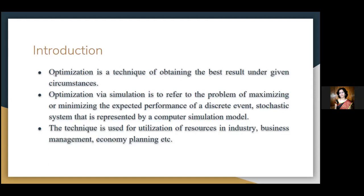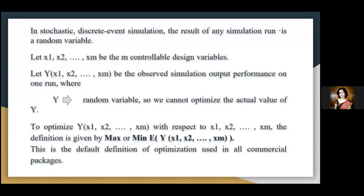The goal in optimization via simulation is to minimize or maximize some measure of system performance, and system performance can be evaluated only by running a computer simulation. Optimization via simulation is relatively new, but already a vast topic with commercial software built on it. Let x1, x2, ..., xm be the controllable design variables. The output performance observed via the simulation is denoted by y(x1, x2, ..., xm). To optimize this output, we find x1, x2, ..., xm that maximize or minimize the mathematical expectation of the performance y.